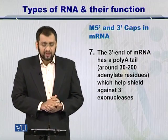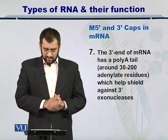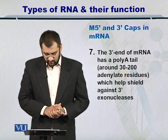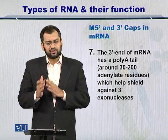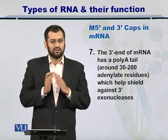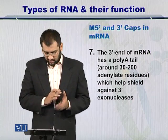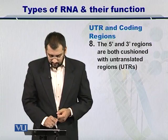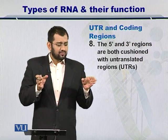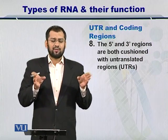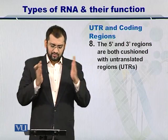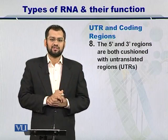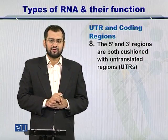The three prime end of the mRNA also has a poly-A tail of adenylate residues. Just like the five prime end, it protects the three prime end from three prime exonucleases. At both the five prime end and three prime end, there are these caps, and within these caps there are untranslated regions, simply called UTRs.